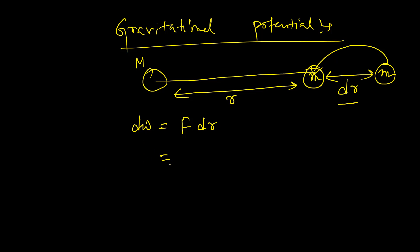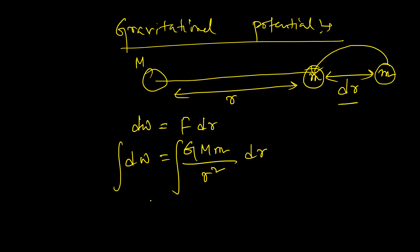The force of gravitation between capital M and small m separated by distance r is G·M·m/r². Multiplied by dr, this gives dW. Now if we integrate both sides, on the left-hand side the limit is from 0 to W, and on the right-hand side the limit is from infinity to r, because initially the object was at infinity and now I am bringing it to be placed in the gravitational field at a distance of r. So we need to find the work done.